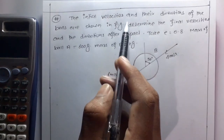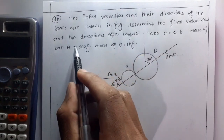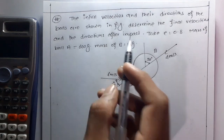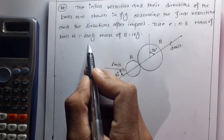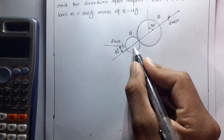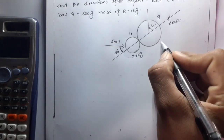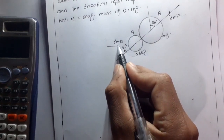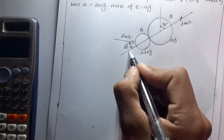The initial velocities and their directions of the balls are shown in the figure. Determine the final velocities and their directions after impact. Take coefficient of restitution e = 0.8, mass of ball A is 600 grams (0.6 kg), and mass of ball B is 1 kg.